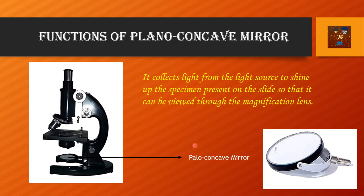Now comes the story of the plano-concave mirror. The mirror is situated here and it looks like this. It can be revolved using screws, and it can be fixed or pulled out. It collects light from the light source — which can be sunlight, tube light, or any other type — and shines it up onto the specimen on the slide. The light collected by the mirror goes through the condenser and diaphragm and then illuminates the specimen placed on the stage.